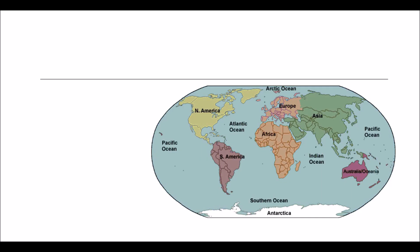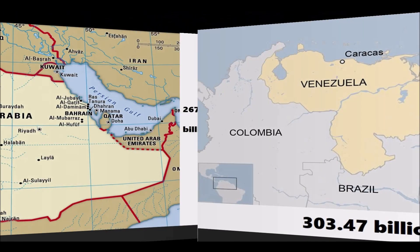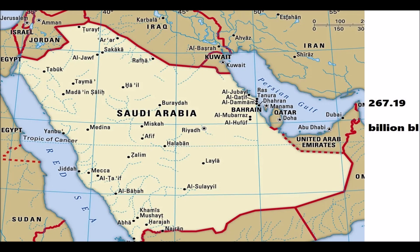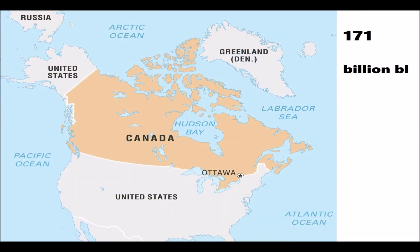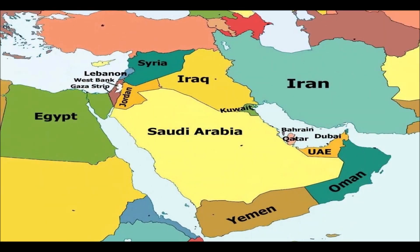Currently, according to explored oil reserves, Venezuela possesses the most oil and gas reserves, amounting to 303.47 billion barrels. Saudi Arabia holds 267.19 billion barrels, and Canada holds 171 billion barrels.